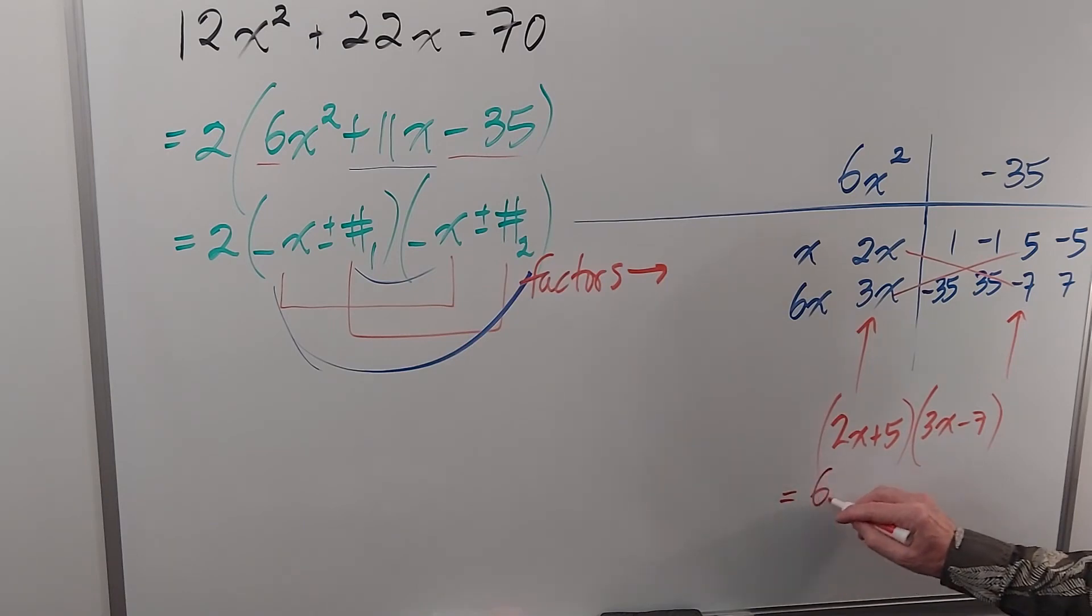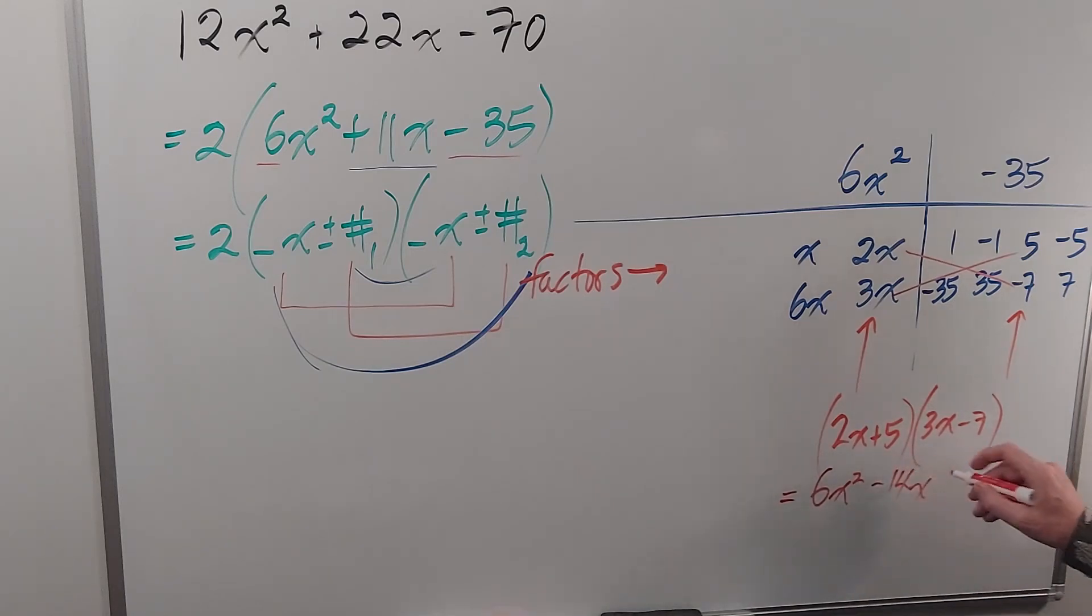First I get 6x² of course from the f in FOIL. The outside gives me negative 14x. The inside gives me 15x. So you see I am multiplying diagonally to get those two terms and then of course minus 35. But this does not add up to 11x so that's not the correct possibility.